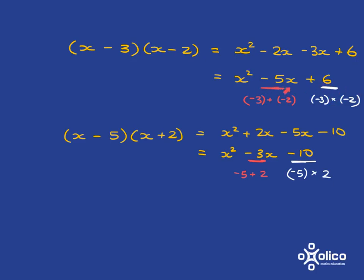And this negative 5 is equal to negative 3 plus negative 2. Similarly here, this negative 10 is equal to negative 5 times 2, and this negative 3 is equal to negative 5 plus 2.